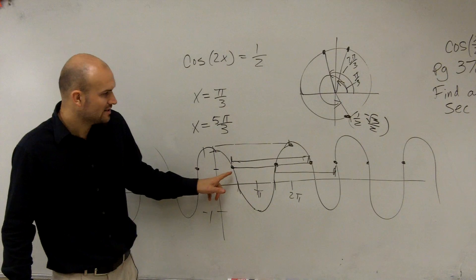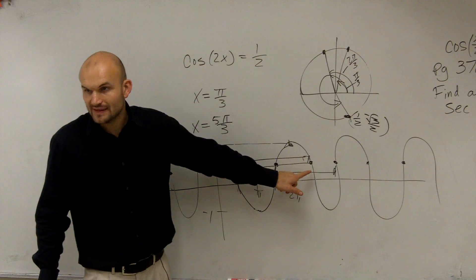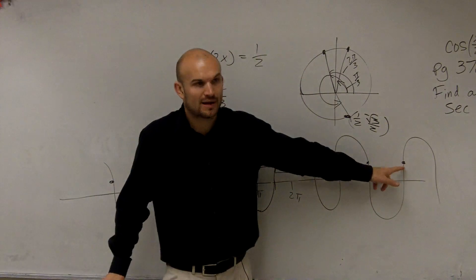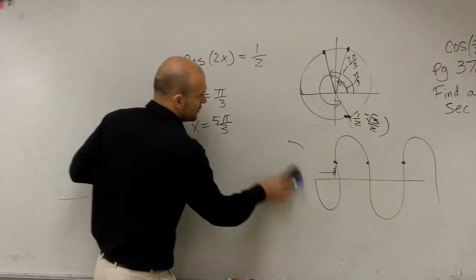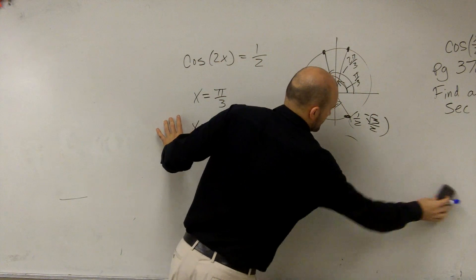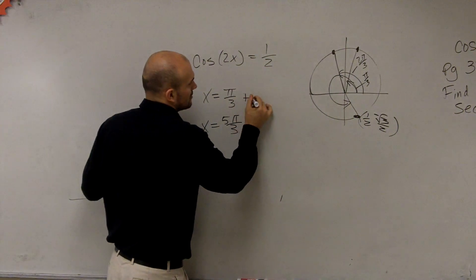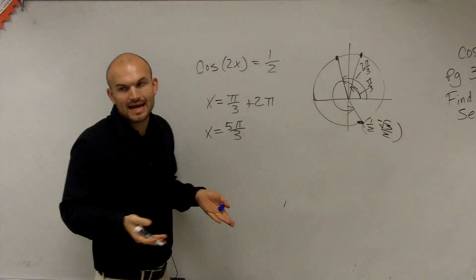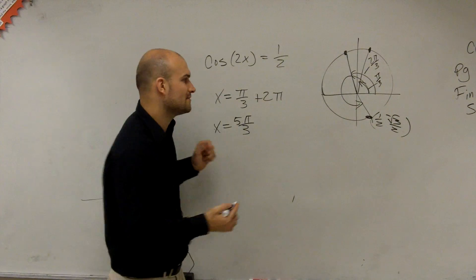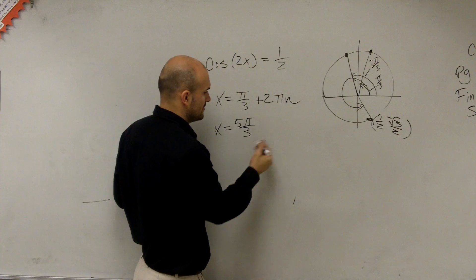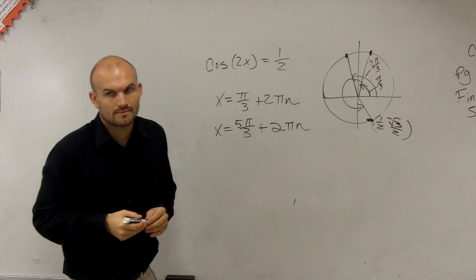If I know my first solution is π/3, to get to the next answer I add 2π, and then 2π again. So the way we write the answer when finding all real solutions is: 2x = π/3 + 2πn, and 2x = 5π/3 + 2πn, where n represents any integer since the cosine graph goes infinitely in both directions.